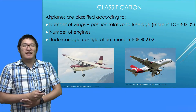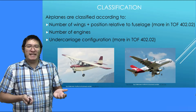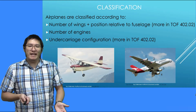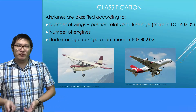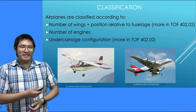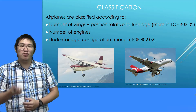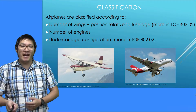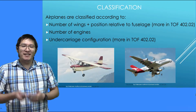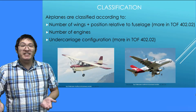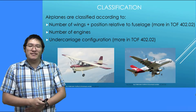Alright, airplanes are classified in different ways. One of them is the number of wings and the position of said wings relative to the fuselage — you will go over this in a future lesson. You can also classify them by the number of engines. And finally, by their undercarriage, or landing gear configuration. Again, more on this in future lessons.